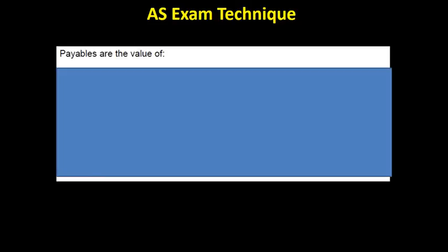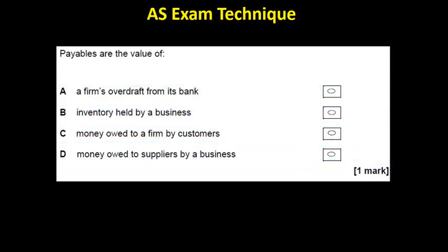Finally, I should know what payables are. Basically, I think in my mind, payables are people I owe money to. Okay, let's have a look at the options. It's not an overdraft. It's not inventory. It's not money owed to me by my customers. It's money I owe to my suppliers by a business. So the answer is D.